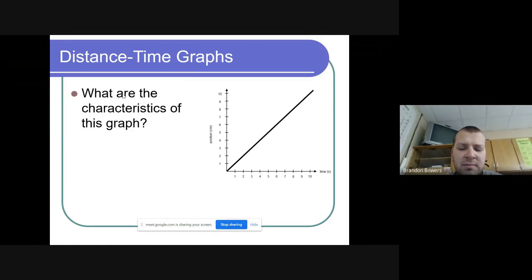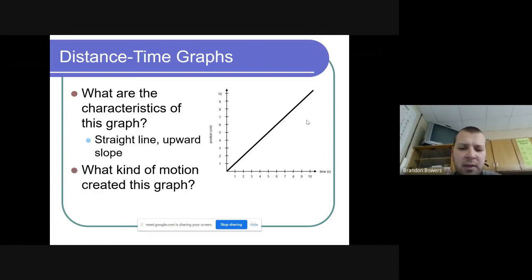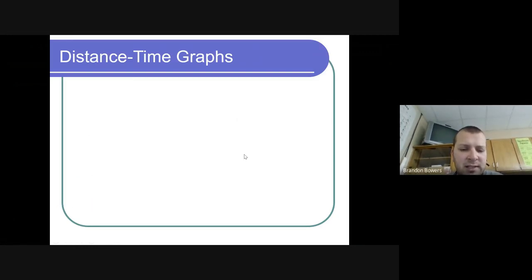What are some characteristics that we see here? It's a straight line going up in the positive direction. What kind of motion created this graph? The ball was constantly moving because every second it traveled a centimeter, so that ball is constant.